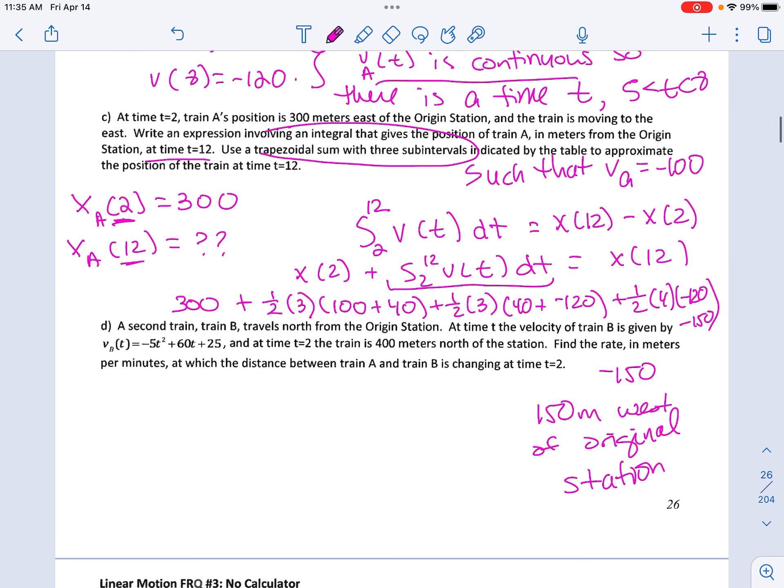Last one. It says there's a second train, B. It's going traveling north. So at time T, the velocity of train B is given by this equation. So for this one, we're given an equation. And at time 2, the train is 400 meters west. So velocity at time 2 is 400. Find the rate in meters per minute at which the distance between train A and train B is changing. This is the velocity of B.